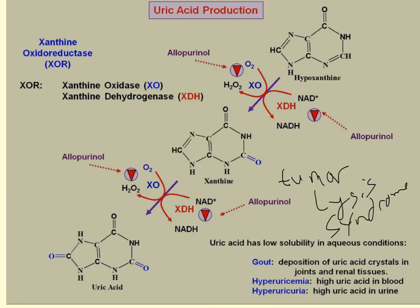Depending on where the uric acid precipitates will determine what problems arise. Typically it will precipitate either in the kidneys, causing kidney problems, or in the joints, causing gouty arthritis. By taking allopurinol, you prevent uric acid production and therefore prevent the precipitation.